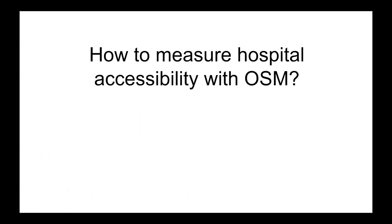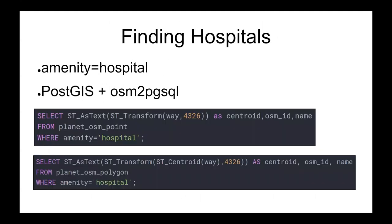How can we measure hospital accessibility using OpenStreetMap? The first step is to find all the hospitals in our area. We can look at the tag amenity equals hospital. To prepare the data for querying, I downloaded an extract from Geofabrik and imported it into PostGIS using the OSM to PG-SQL utility. Two SQL queries were then used to find all hospitals with the amenity equals hospital tag — the first for centroids if it's a node, and the second for ways, calculating the centroid of the polygon.